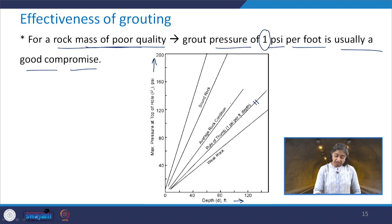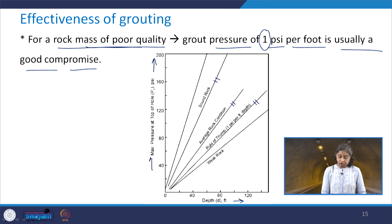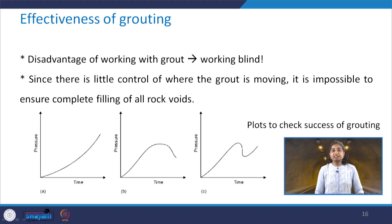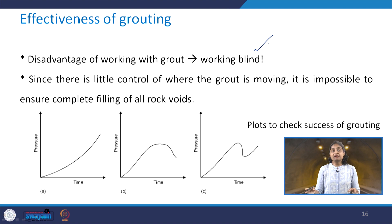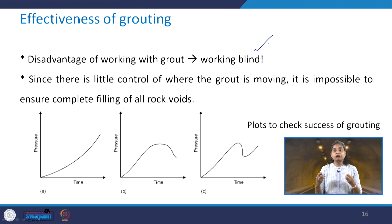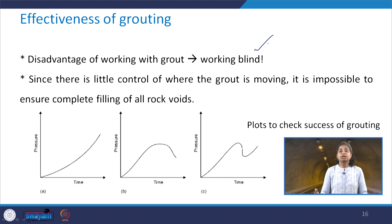For average rock conditions and sound rock, different pressure values apply, and based on the rock quality we can determine what the maximum pressure at the top of the drill hole should be. There are some disadvantages associated with grouting because the working is extremely blind — we do not know exactly what is happening, and there is very little control of where the grout is moving. It is almost impossible to ensure whether complete filling of all rock voids has taken place. Therefore, we need some kind of check on the success of grouting. Plotting the pressure versus time curve gives us an idea whether grouting is successful.